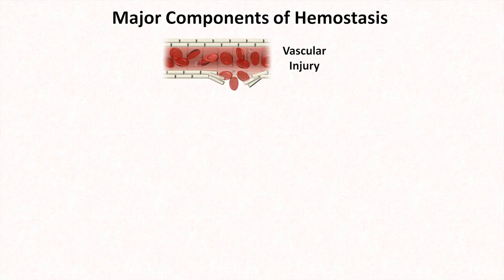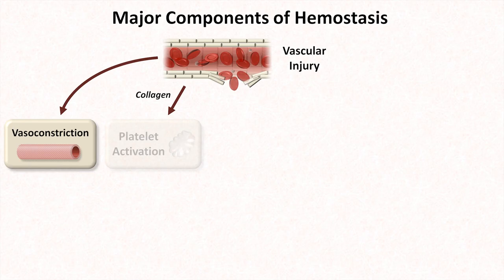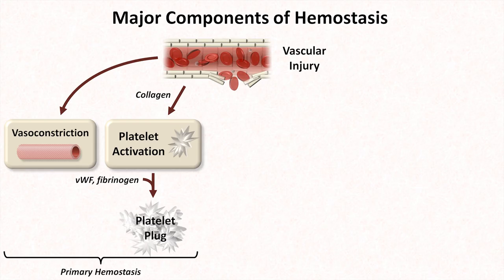This next diagram will go through those components in slightly greater detail and will introduce the seven key proteins involved in hemostasis. Once again, the very first reaction to vascular injury is vasoconstriction, followed by platelet activation, which is largely mediated by exposure of collagen to receptors on the platelet surface. Platelet activation results in a change in platelet shape and allows platelet aggregation, which is mediated largely by proteins called von Willebrand factor and fibrinogen. The end result of platelet activation is something called the platelet plug, which is a short-lived temporary patch over a defect in the vessel wall. It's sufficient for stopping bleeding from very minor injuries.